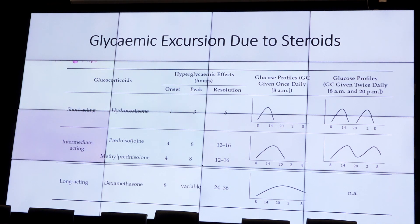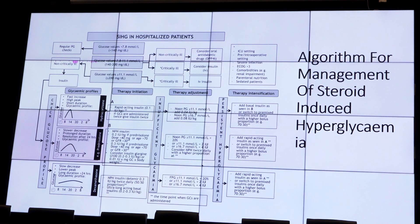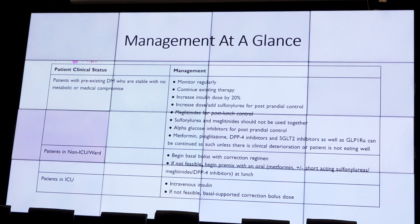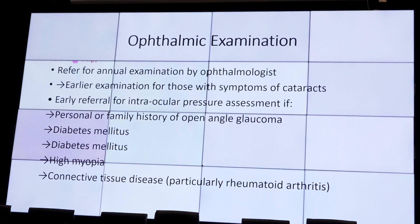Look carefully at matching insulin type to steroid type: if the patient is on hydrocortisone — a short-acting steroid — use short-acting insulin. If on prednisolone or methylprednisolone, use intermediate-acting insulin such as Insulatard or mixed insulin. If on dexamethasone, which acts for more than 24 hours, use long-acting insulin like glargine, and then add bolus doses based on pre-meal sugars. In OPD patients, you can use oral agents — DPP-4 inhibitors, alpha-glucosidase inhibitors, or once-daily insulin. For IPD patients, put them on a basal-bolus insulin regimen for tight glucose control.